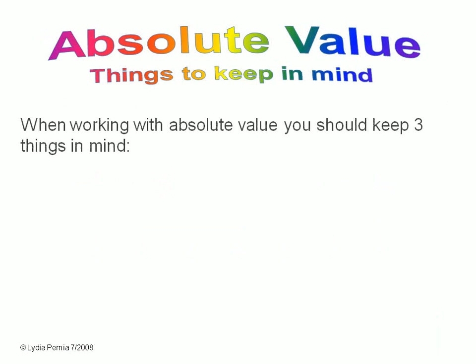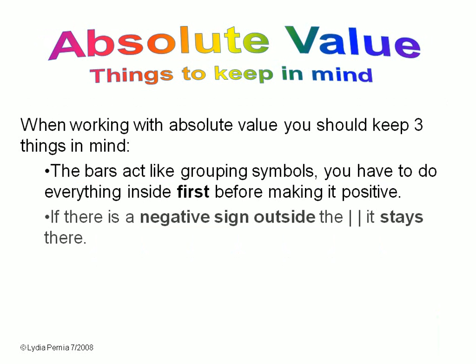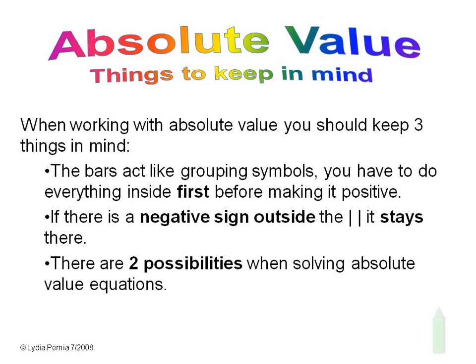When you work with absolute value, you have to keep three things in mind. First, the absolute value bars act like grouping symbols — you have to do everything inside the bars first before making it positive. Second, if there's a negative sign outside the absolute value bars, it stays there. And third, if you are working with absolute value equations, there are two possibilities and therefore two answers to the equations.